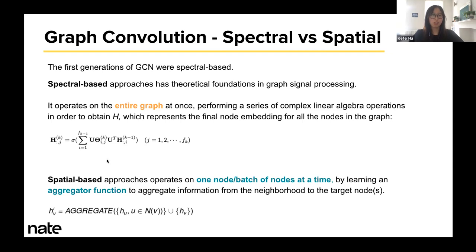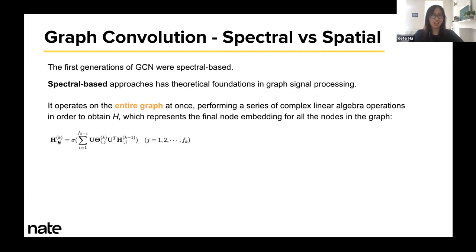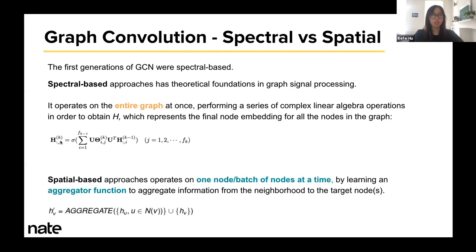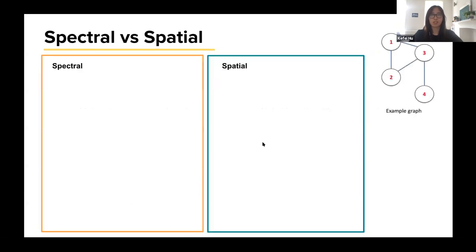On the other hand, before I move on, HK represents the node embedding after applying the convolution layer for the kth time. Moving on, spatial-based approach operates on one node or a batch of nodes at a time. It does so by learning an aggregated function to aggregate the information from neighborhood to the target node. This is the expression after one convolution layer. Don't worry if this doesn't make sense initially. I will walk through an example to illustrate this in detail.